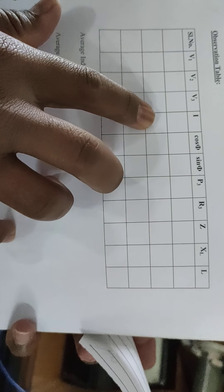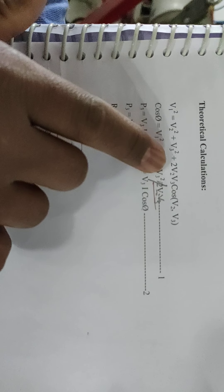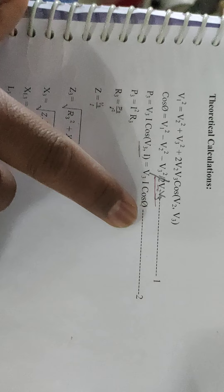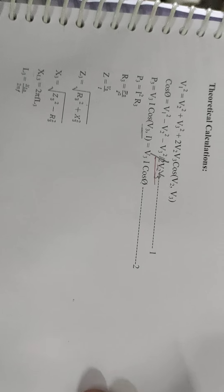Looking at the tabular column for this experiment, we have voltmeter readings V1, V2, V3, and one ammeter reading I. The remaining parameters are derived using simple formulas. V1² = V2² + V3² + 2·V2·V3·cos(φ). The cosine angle can be found as: cos(φ) = (V1² − V2² − V3²) / (2·V2·V3). Since V3, I, and cos(φ) are known, we can find P3 = V3·I·cos(φ).